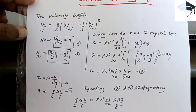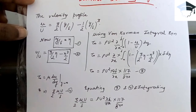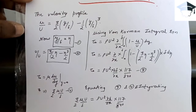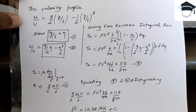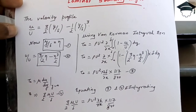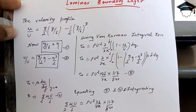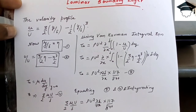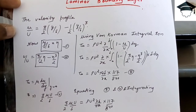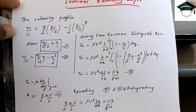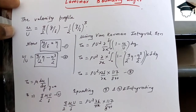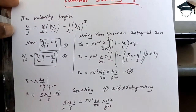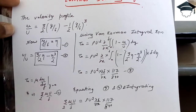Now using the von Kármán integral momentum equation: τ₀ = ρU² · (d/dx) ∫₀^δ (u/U)(1 − u/U) dy. Substituting the value of u/U from equation 2 and dy = δ·dη from equation 1, and solving this equation, we get τ₀ = ρU² · (dδ/dx) · (117/840). This is equation number 3.